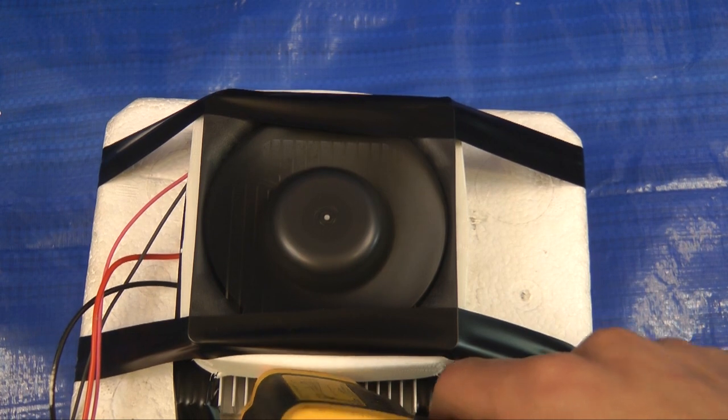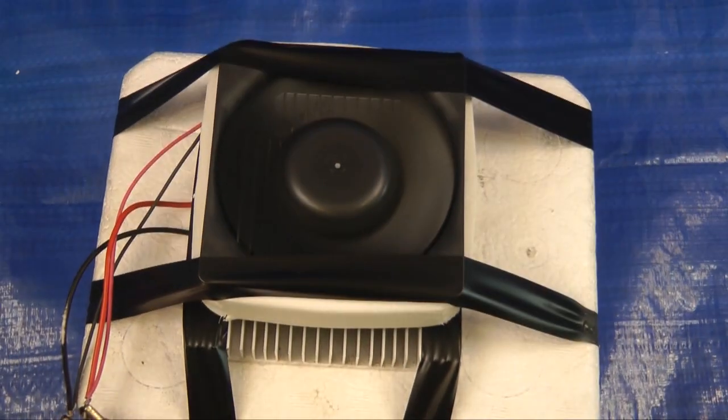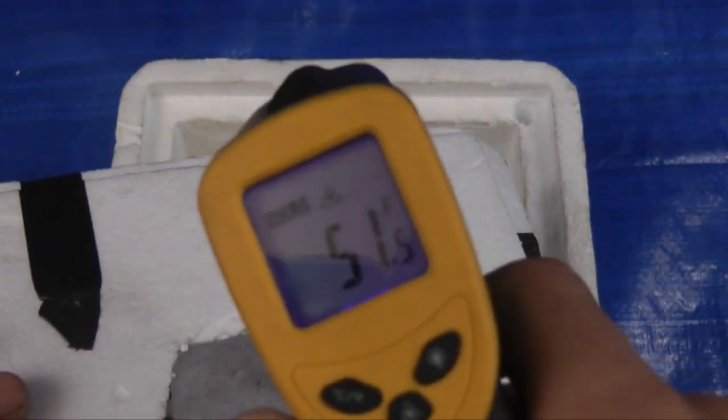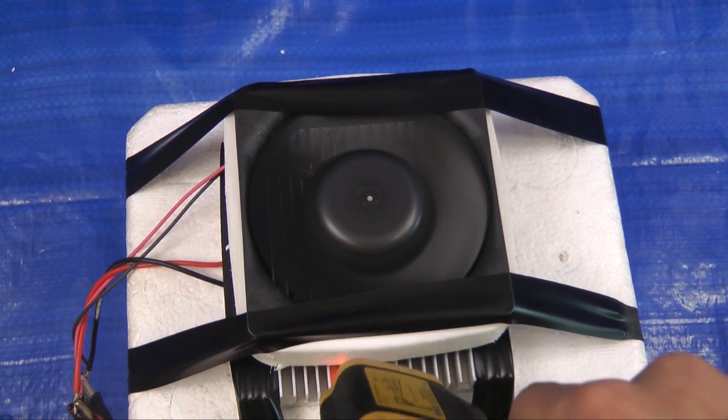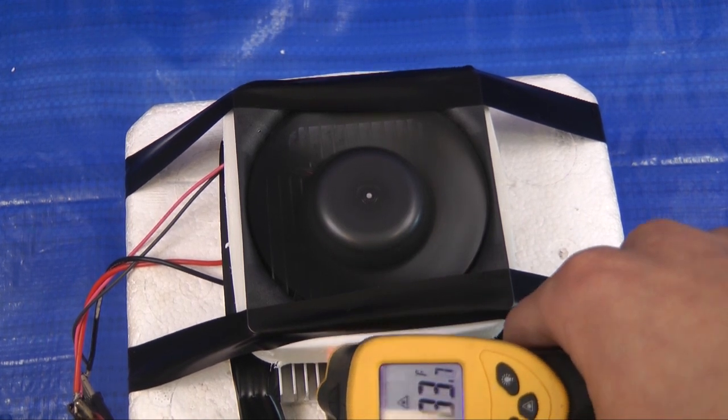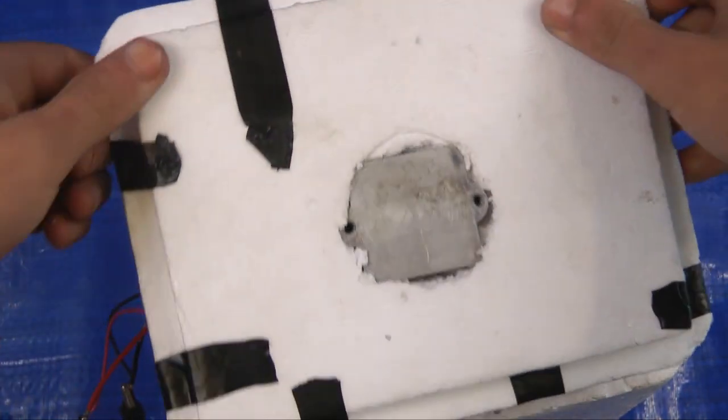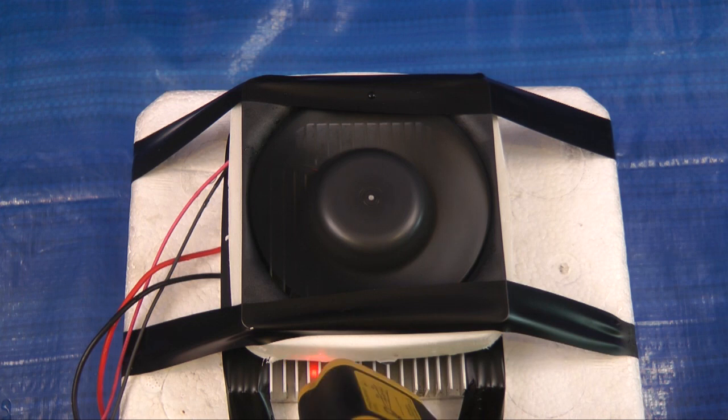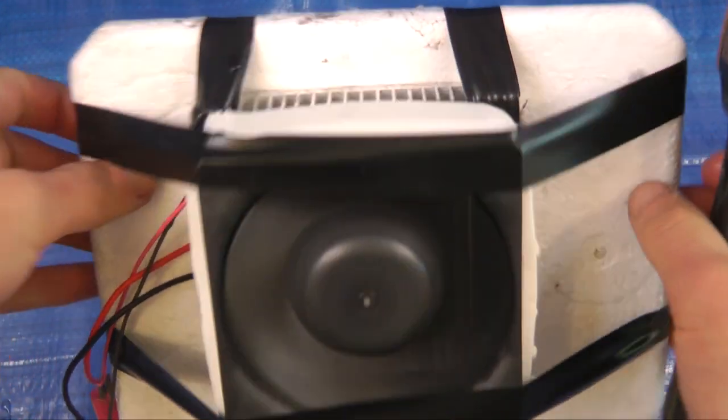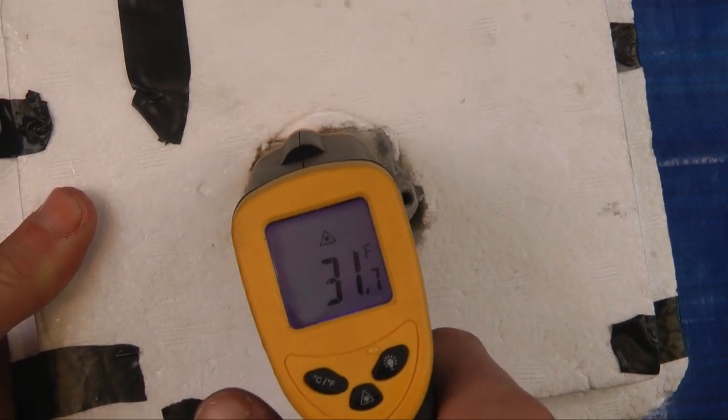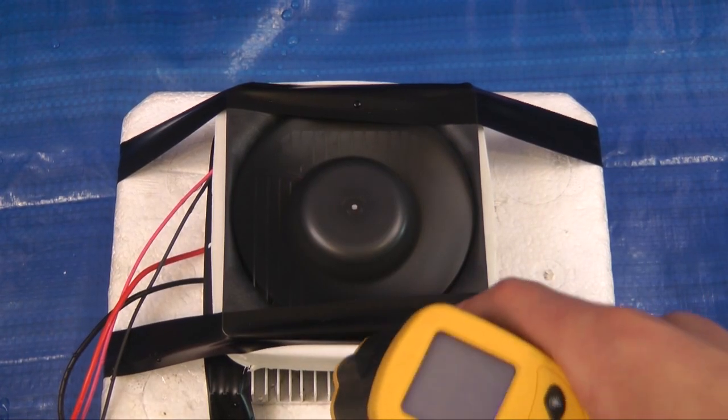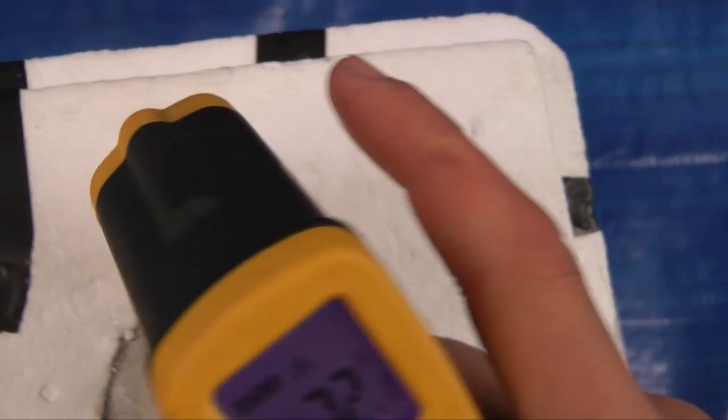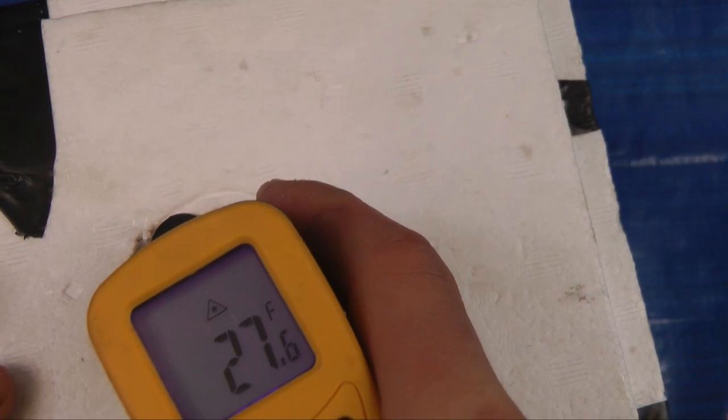After about 5 minutes the heat sink is 86 degrees and the internal block is 51 degrees. After about 10 minutes the heat sink is 83 degrees and the internal component is 48 degrees. After about 30 minutes the heat sink is 80 degrees and the internal block is 31. After 1 hour the heat sink is 78 degrees and the internal has ice on it and is 27 degrees.